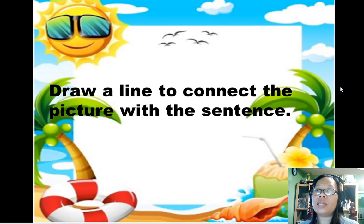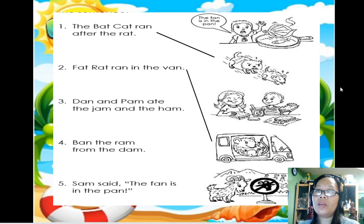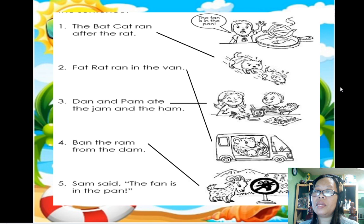Now draw a line to connect the picture to the sentence. Number one: the bat cat run after the rat. Two: fat rat run in the van. Three: Dan and Pong ate the jam and the hub. Five: Pan said the fan is in the van.